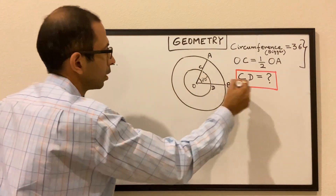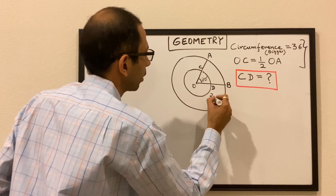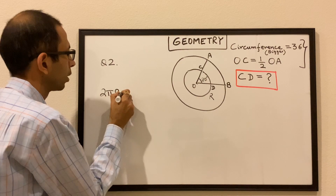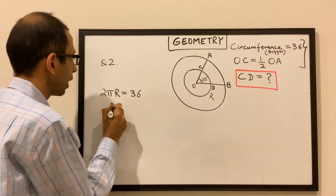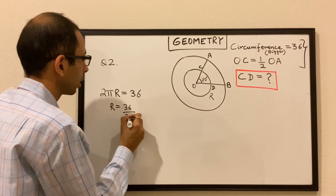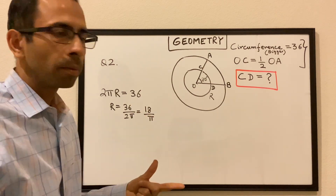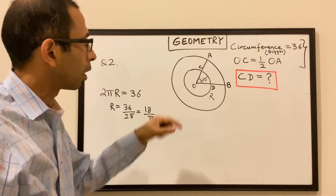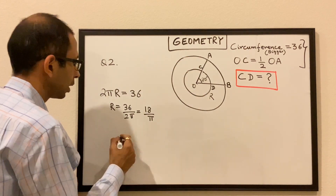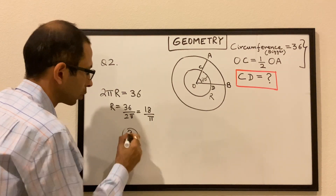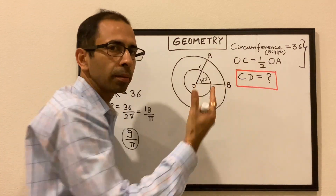Let's say the overall radius of the bigger circle is R. So 2πR equals 36, because the circumference is given to be 36. So R will be 36 over 2π, or 18 over π. That's the length of the radius of the big circle. Now the radius of the smaller circle will be half of that — basically half of 18/π — which will be 9 over π. This is the radius of the smaller circle, because it's given that OC is half of OA.